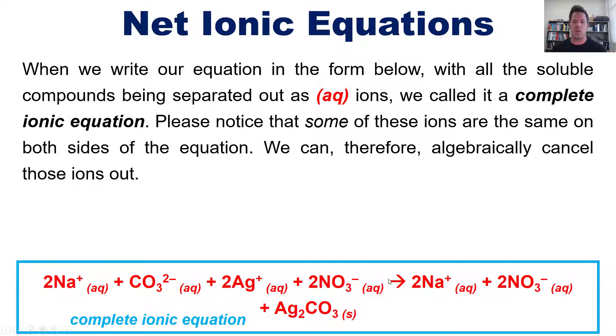So, unlike a mathematical equation, where we have an equal sign separating the left from the right, in chemical equations, we have a yield sign or arrow separating the left from the right. Nevertheless, you can see that there are some species that are the same on the left as on the right. You see, for example, the sodium plus AQ. There's one on the left side of the equation, and there's one over here on the right.